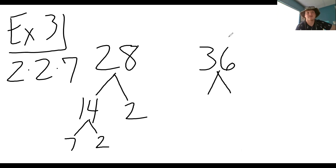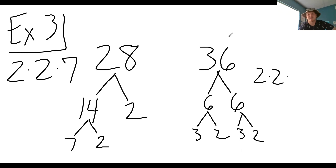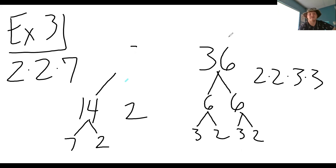For 36 — six times six. Then I can break down each six by doing two and three and two and three. So I would have two times two times three times three for 36.